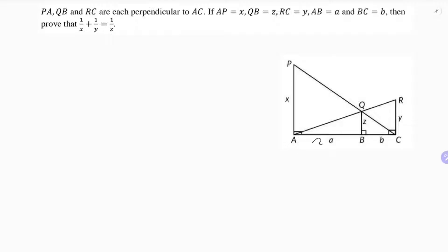We'll start from point A and take two triangles. First, small triangle ABQ, then from A we take triangle ACR — small and big. Then again starting from C: triangle CBQ and triangle CAP — small and big. First, I'll take triangle ABQ and triangle ACR and prove these two triangles similar.